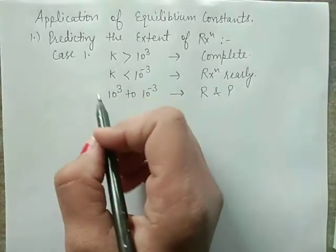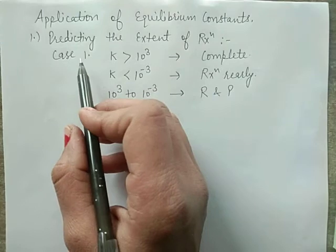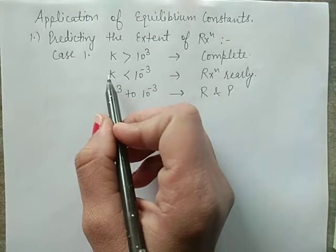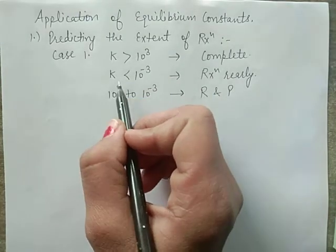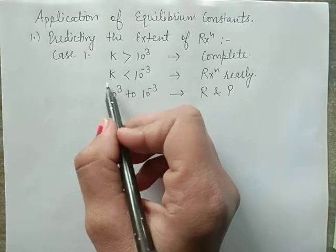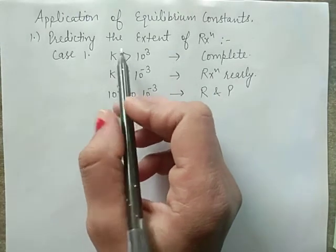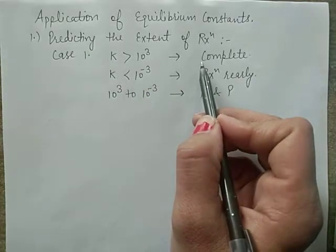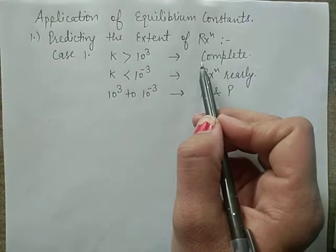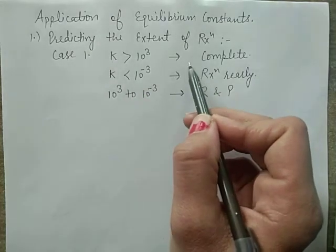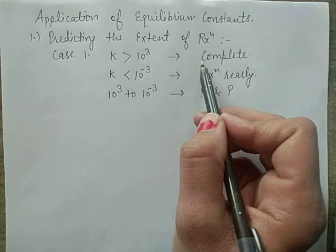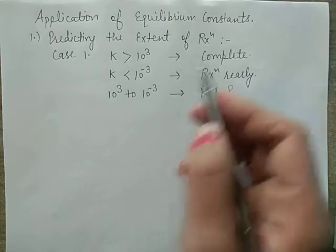We can say that if K value is large, the reaction proceeds further, meaning products are more stable than the reactants.